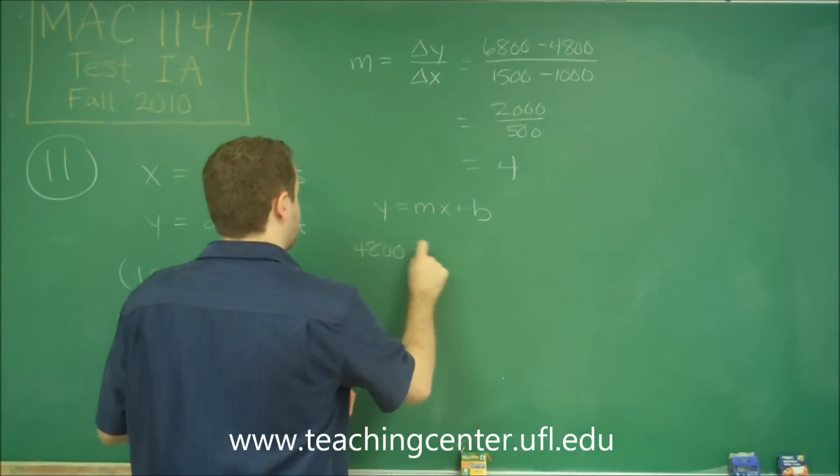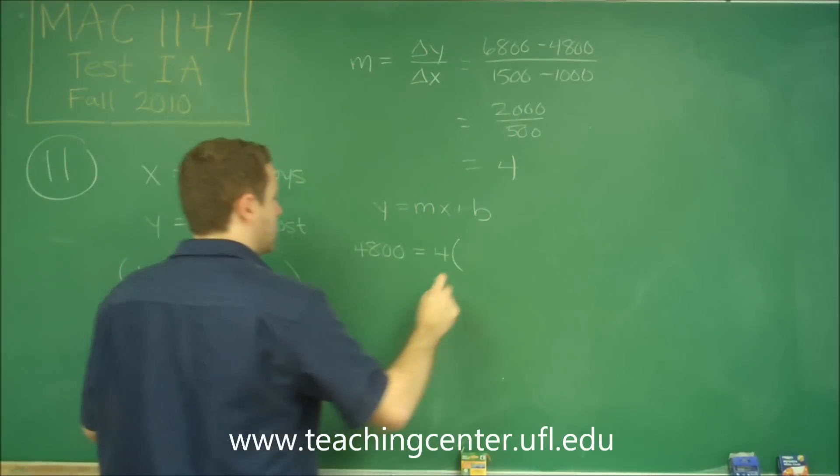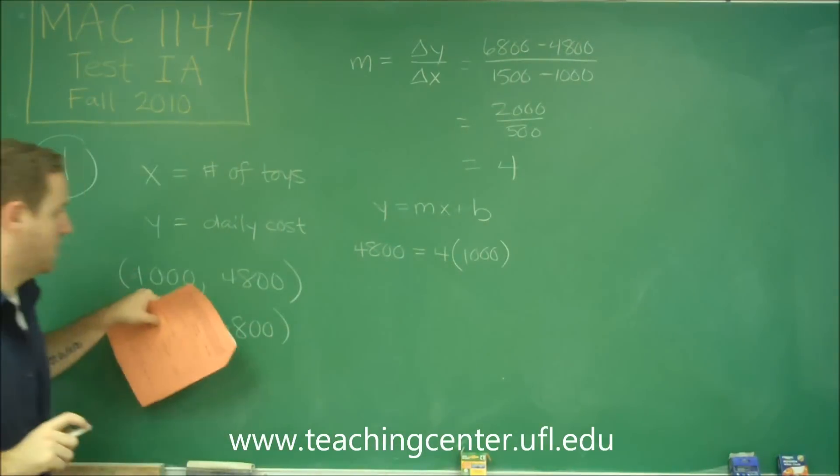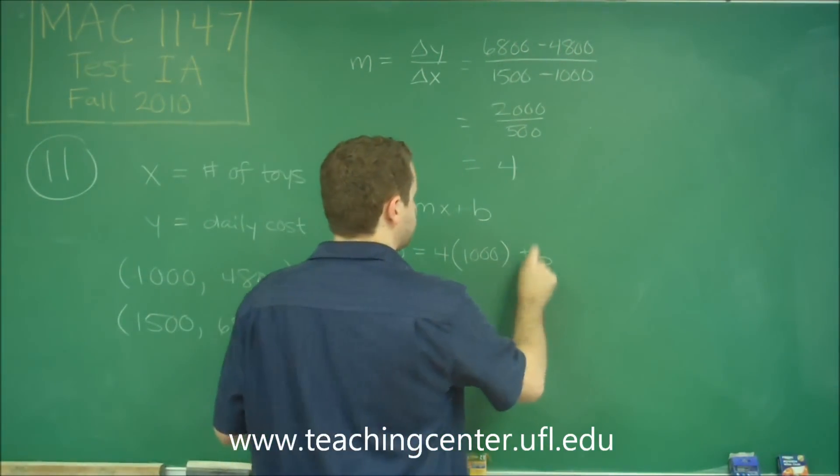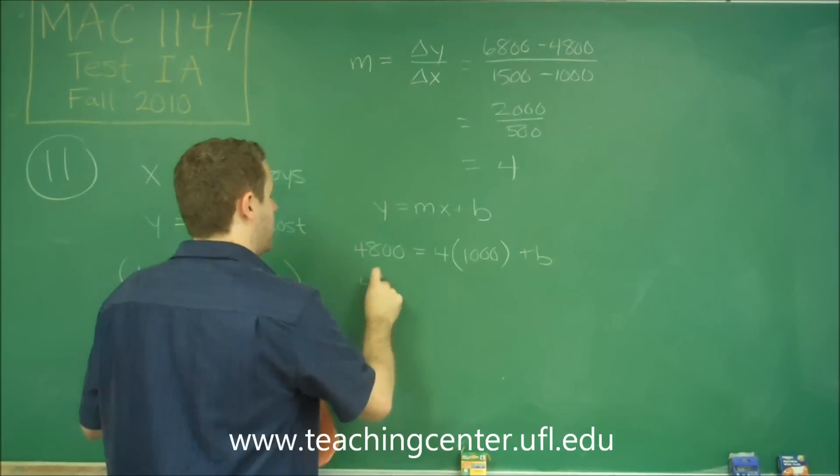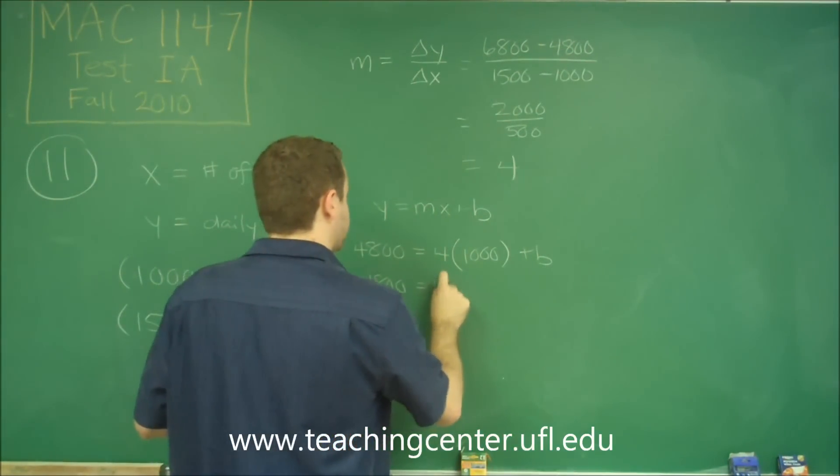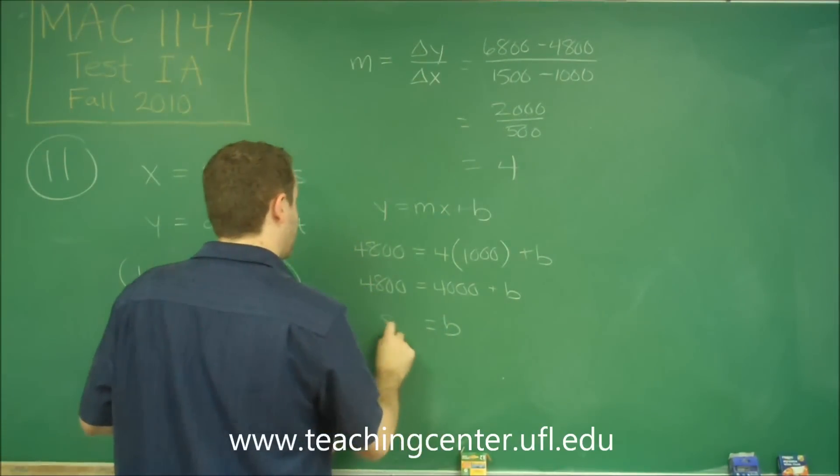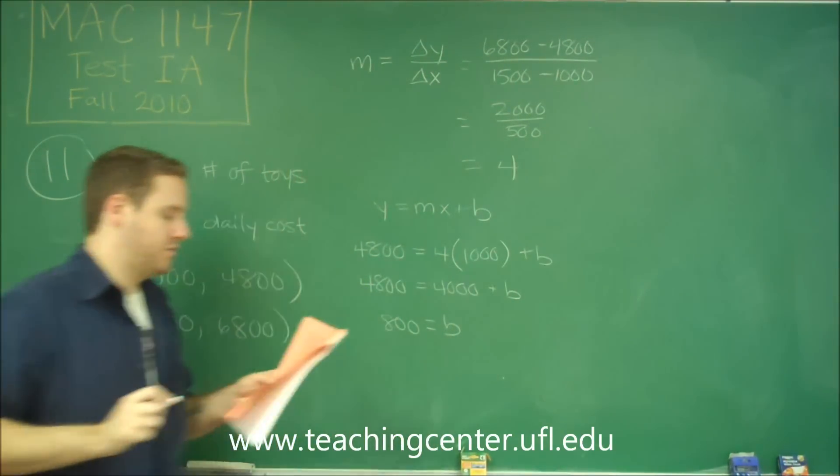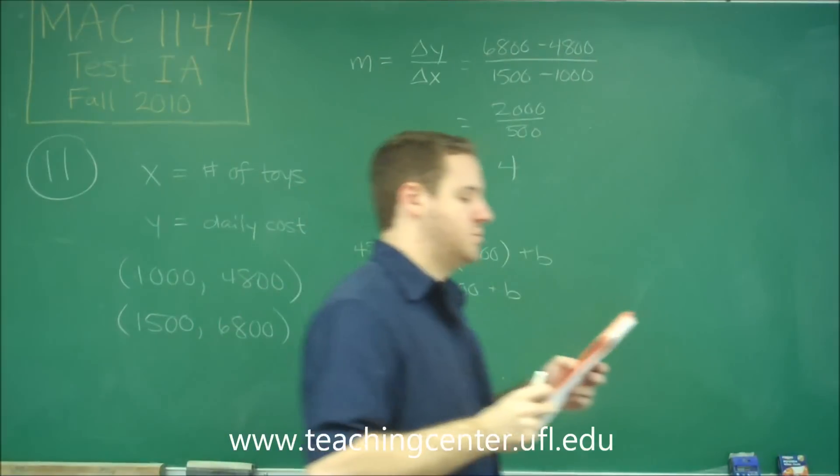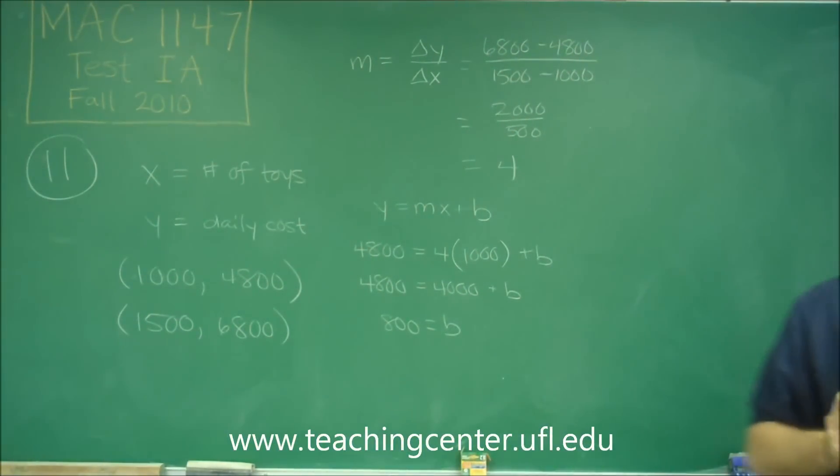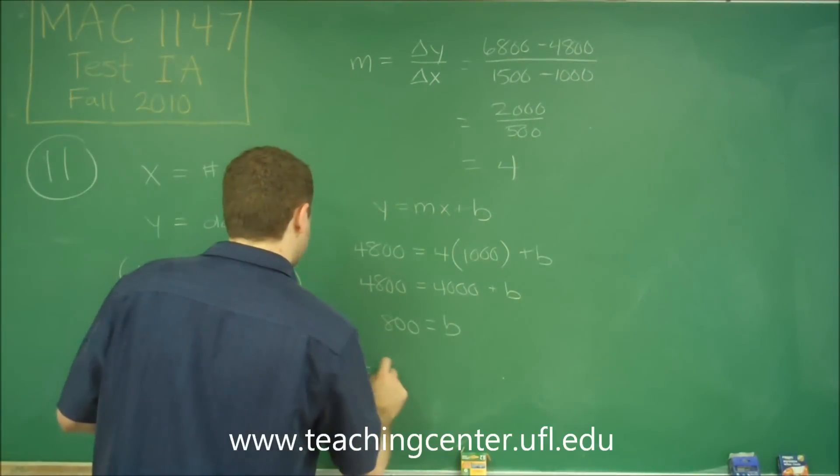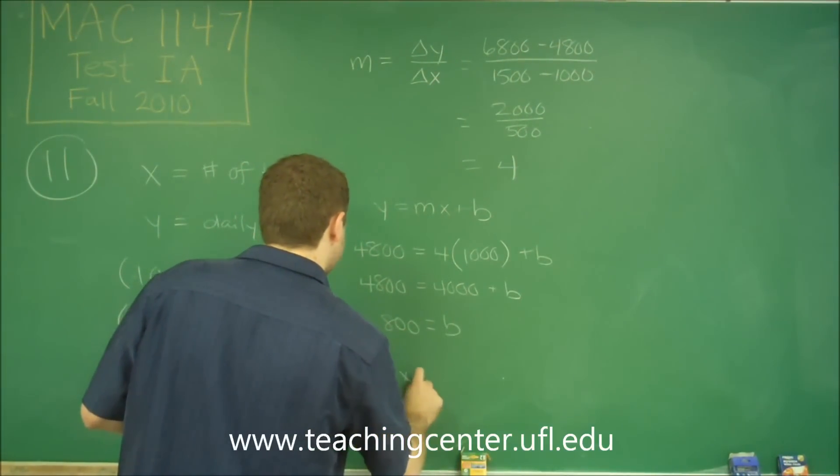So we can say 4,800 equals 4 times our X, that corresponds to that 4,800, which is 1,000 plus B. So we get 4,800 equals 4,000 plus B. So B is equal to 800. So our equation now for our entire cost is Y equals 4X plus 800.